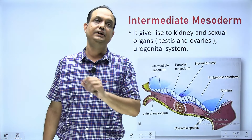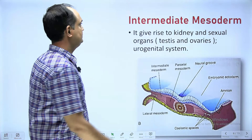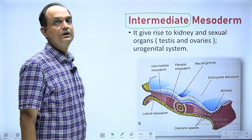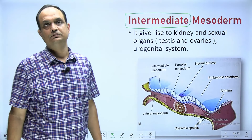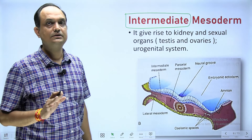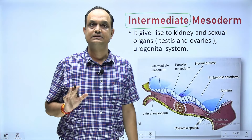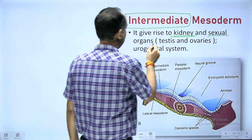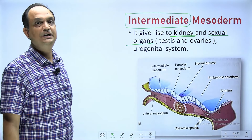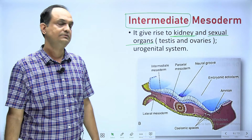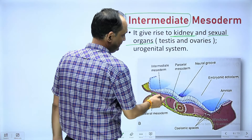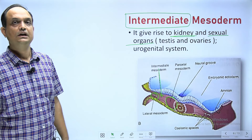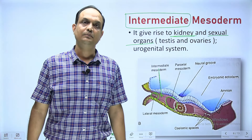The next mesoderm is the intermediate mesoderm. This intermediate mesoderm forms your genitourinary system — it gives rise to kidneys, ovaries, and testes. It is purely responsible for kidney and sexual organs. It lies between the para axial and lateral plate mesoderm, making it the middle portion of the intra embryonic mesoderm.